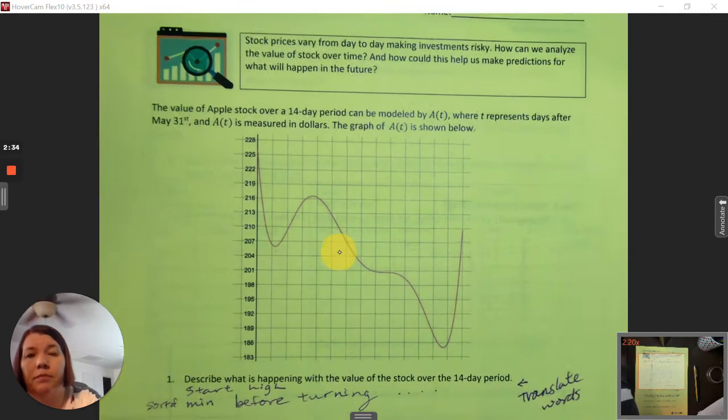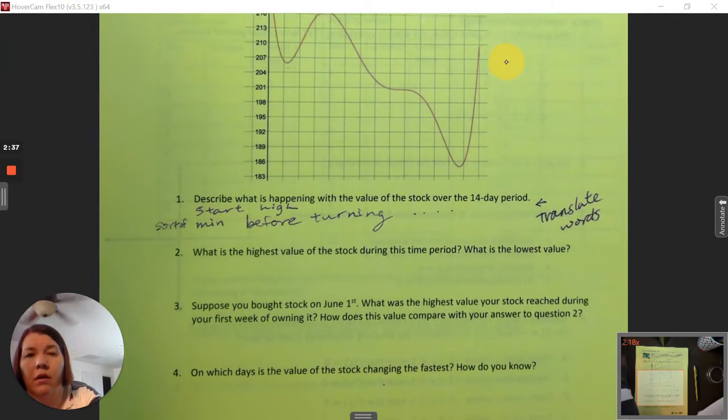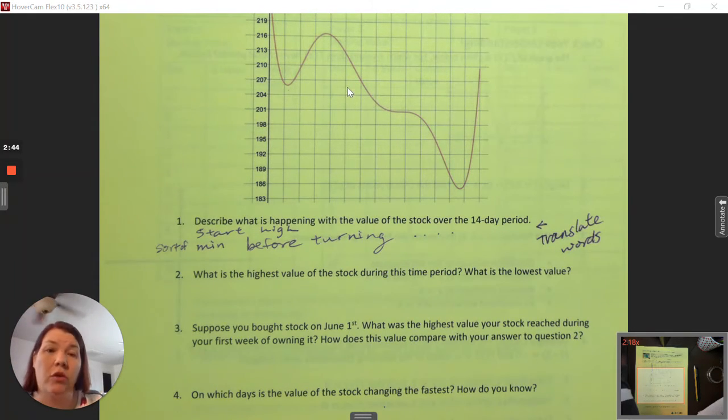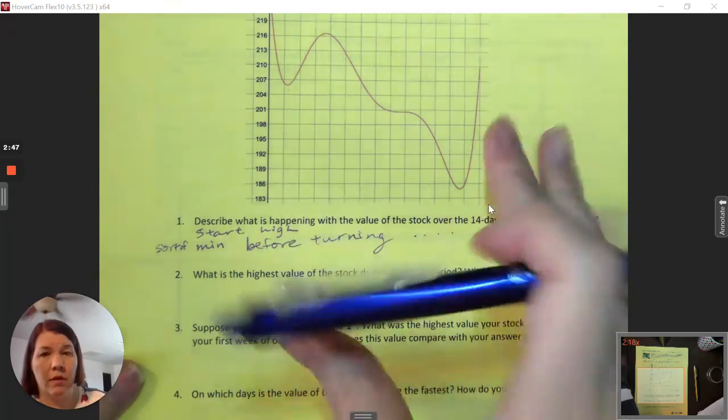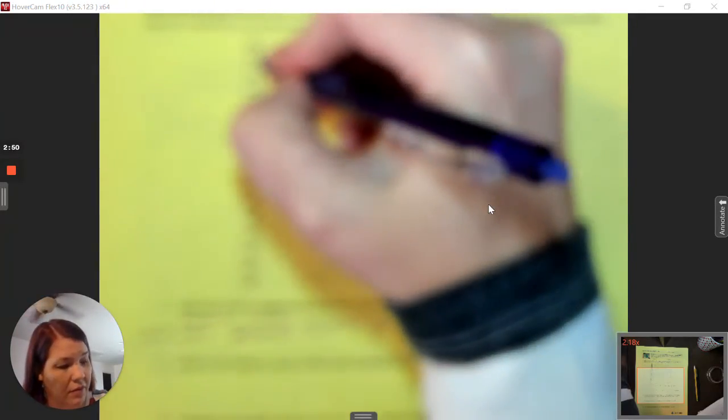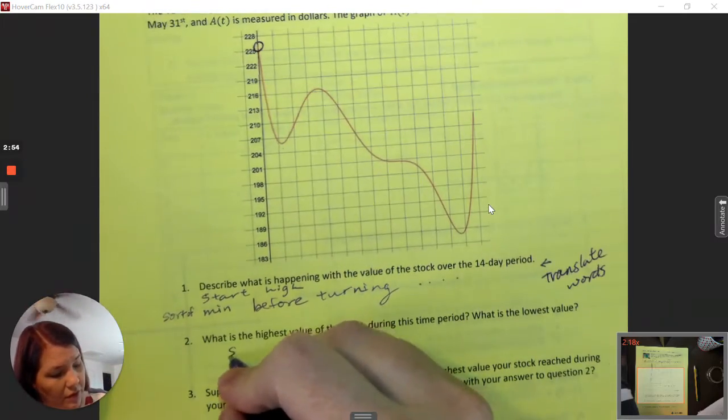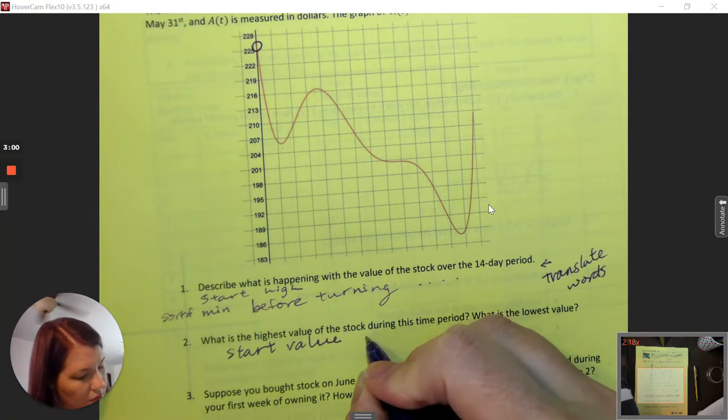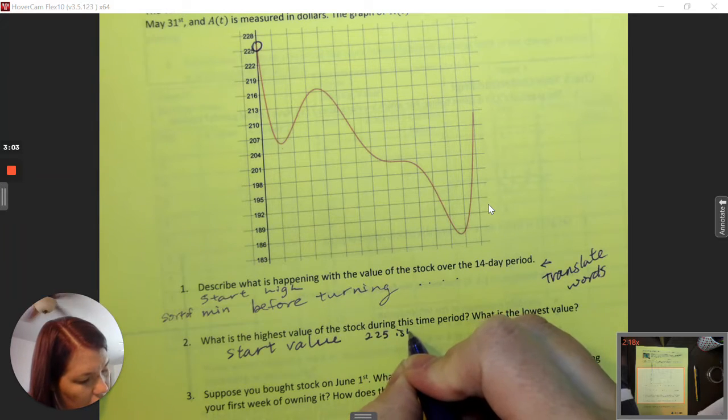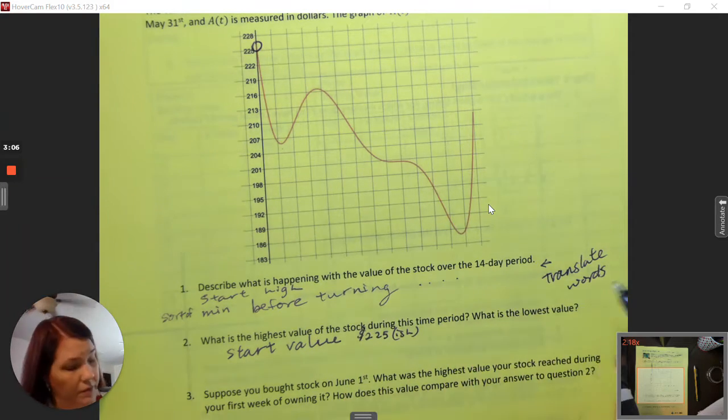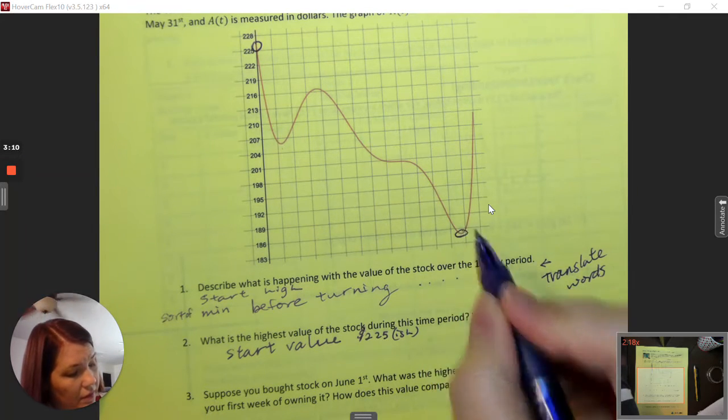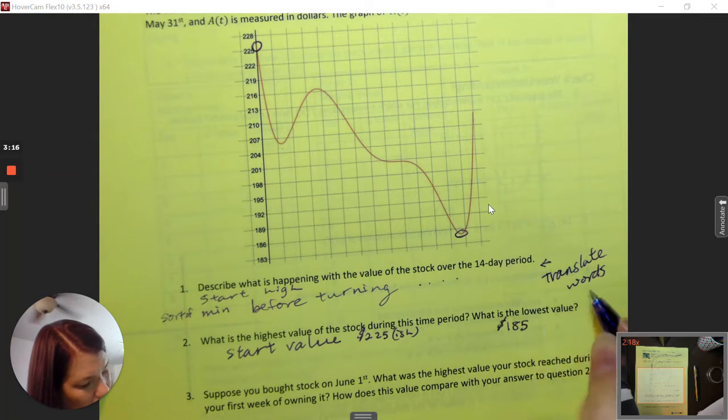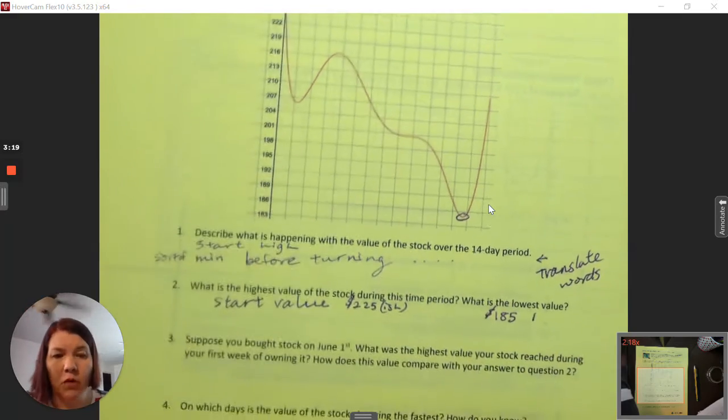What's the highest value of the stock during this time period? So the highest is where it starts, which is around $225, so starting value about $225-ish. And the lowest value is here, which is around $185. Really easy to tell that through the picture.